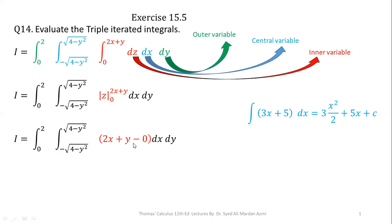In the next step we apply integration with respect to x, but first let us revise an example. If we integrate 3x plus 5 with respect to x, the answer is 3x squared over 2 plus 5x plus C. If a constant term is multiplied by a variable term, the constant remains as it is and integration is applied to the variable term. If a constant is added or subtracted, we integrate it as a constant times x.